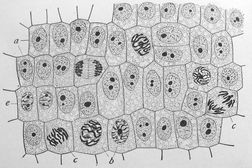Organelles are parts of the cell adapted and/or specialized for carrying out one or more vital functions, analogous to the organs of the human body such as the heart, lung, and kidney. Both eukaryotic and prokaryotic cells have organelles, but prokaryotic organelles are generally simpler and are not membrane-bound. There are several types of organelles in a cell. Some, such as the nucleus and Golgi apparatus, are typically solitary, while others, such as mitochondria, chloroplasts, peroxisomes and lysosomes, can be numerous — hundreds to thousands. The cytosol is the gelatinous fluid that fills the cell and surrounds the organelles.